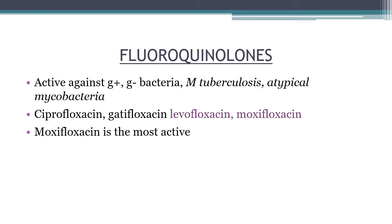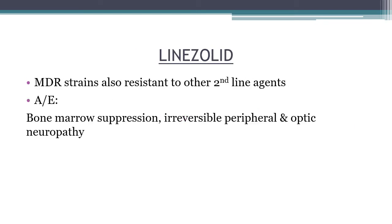Linezolid is a protein synthesis inhibitor that binds to the 50S ribosomal subunit. It is used in the treatment of extended drug resistant tuberculosis and can produce bone marrow suppression, irreversible peripheral neuropathy, and optic neuropathy.